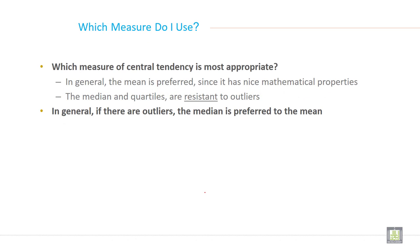Now the question is, which measure do you use? Which measure of central tendency is most appropriate? In general, the mean is preferred since it has nice mathematical properties.